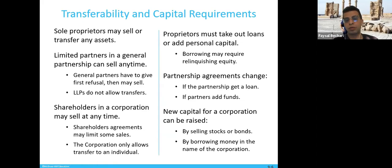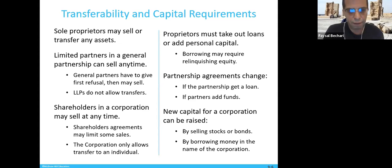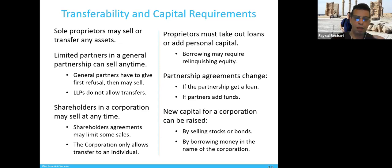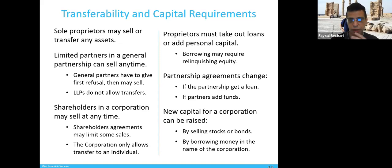When we talk about transferability and capital requirements, the sole proprietor may sell or transfer assets easily because they're the owner. In a general partnership, a partner can sell anytime, but the general partner has to offer the first right of refusal — sell your share to your partner first, and if he refuses, then you can sell it somewhere else.